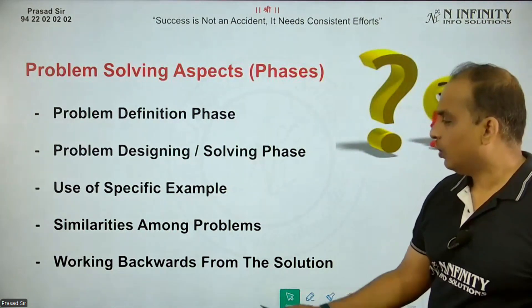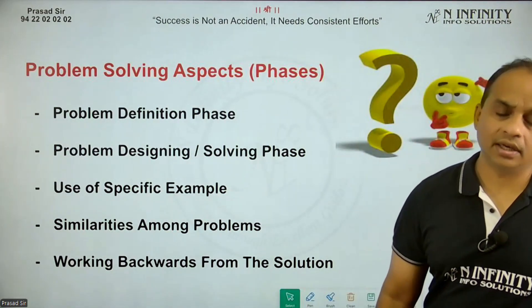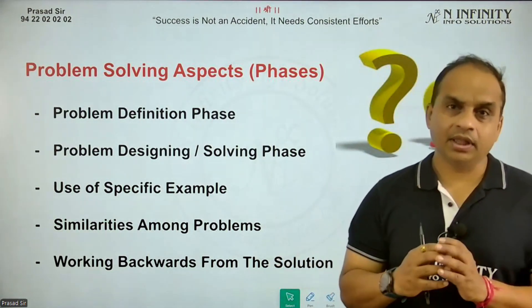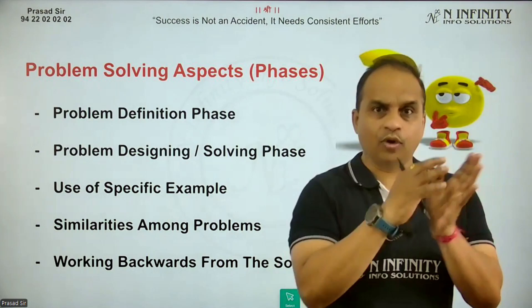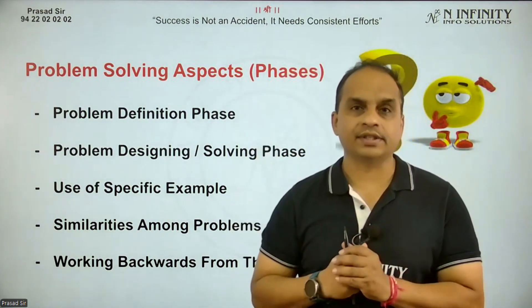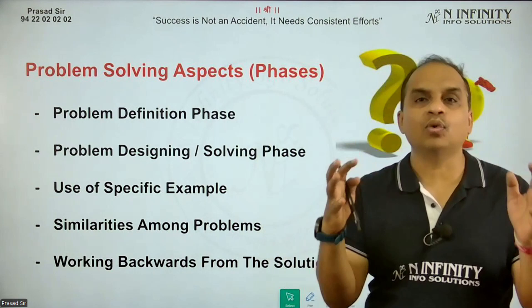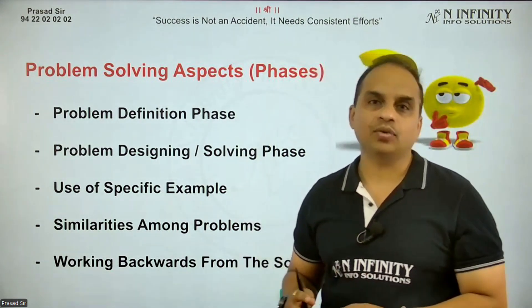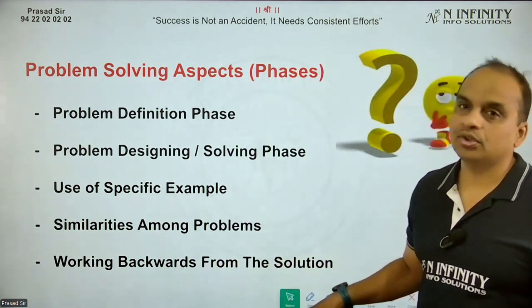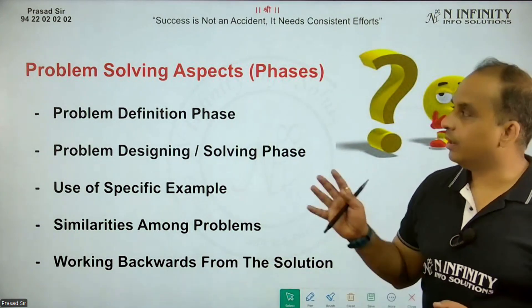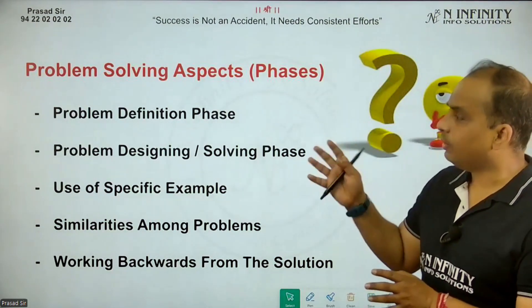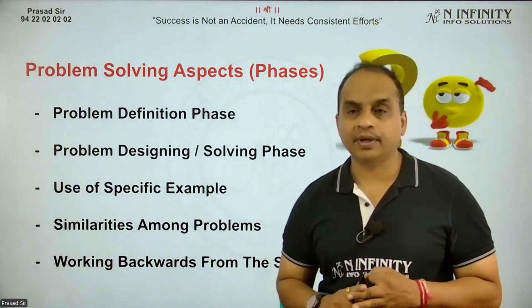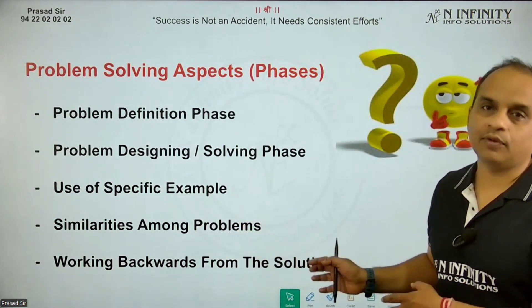Another important aspect is working backward from the solution. Once you reach the solution, you can do backtracking — follow a reverse engineering approach — to get back to the original phase. Sometimes this makes your logic more and more clear about how you started and how you reached the end solution. So working backward from the solution is another very important phase in problem solving. So the phases are: problem definition, problem design, use of specific example, similarities among problems, and working backward from the solution.